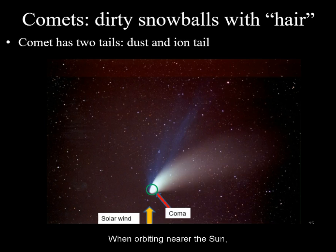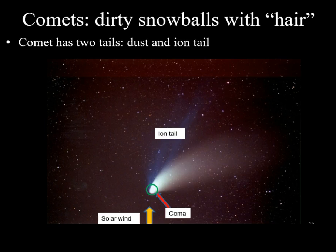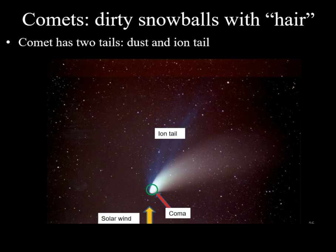When orbiting nearer the sun, the ice starts to evaporate. This can get picked up by the solar wind, forming what is known as the ion or gas tail of the comet, pointing away from the sun.